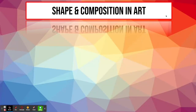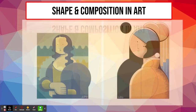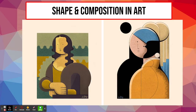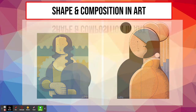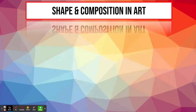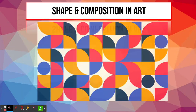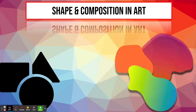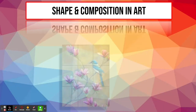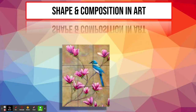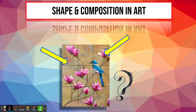Before jumping into our shape project, it's important to gather some basic background information about what shapes are and how they are used in art. In addition to shapes in art, it is also vital that we have an understanding of composition — what composition is, and what artists mean when they talk about good or bad composition in art.